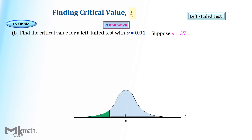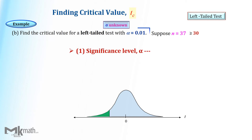Let's take a look at the example for a left-tailed test. Find the critical value with alpha equal to 0.01 and a sample size of 37. Assume that the population standard deviation sigma is unknown. Since the sample size is more than 30, the second condition is satisfied.